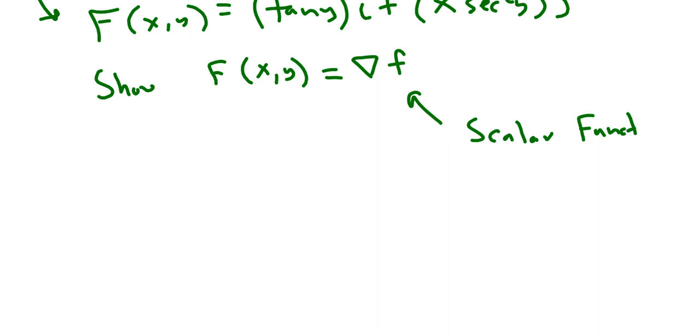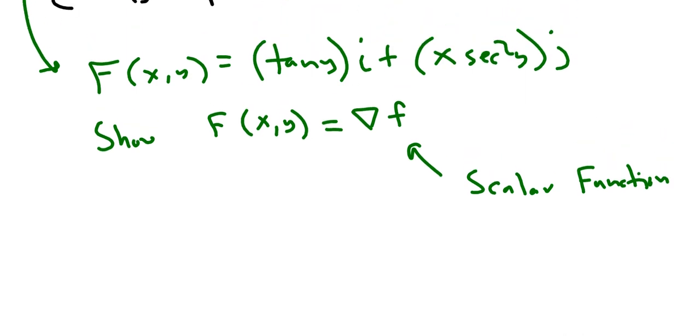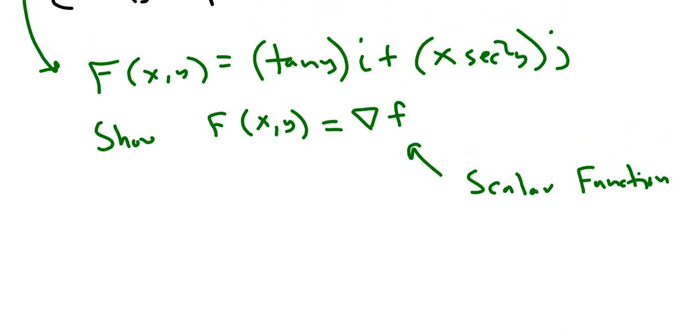Just in case you've forgotten what that is, that means it's a function that might have two or more variables in it, but it returns back to you a single number, a number in the reals. And the gradient vector means you take the partial derivatives of that function. So I'm going to show you how this works here.